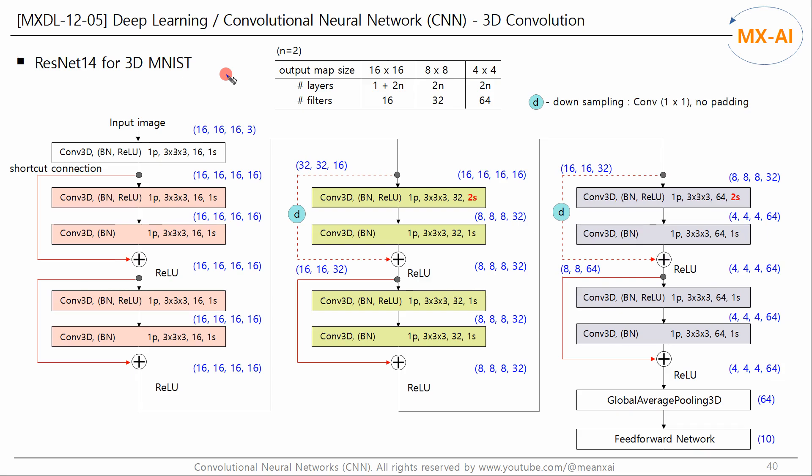Next, we will classify 3D MNIST images using residual network, which we looked at in the previous video. Let's design a ResNet-14 model, which is a residual network model, for the case where n is 2. This model has three sets of layers. For more information about the residual network, please watch the previous video.